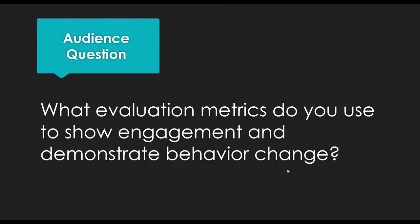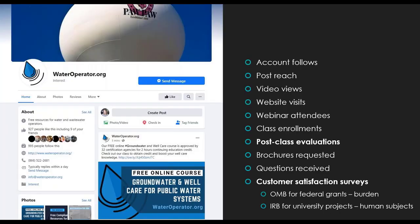We also had a question about what evaluation metrics we use to show engagement and demonstrate behavior change. We use account follows, post reach, video views, website visits, webinar attendees, class enrollments, post class evaluations, brochures requested, questions received, and customer satisfaction surveys. We have a whole section later on about metrics. This is a snapshot of what we use to improve what we do, evaluate effectiveness, and also report to our funders.